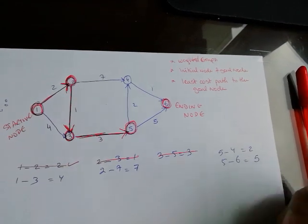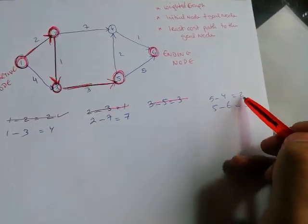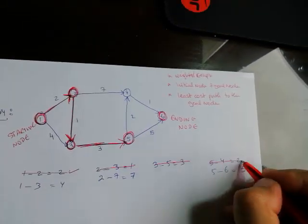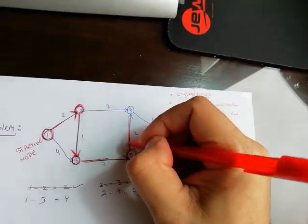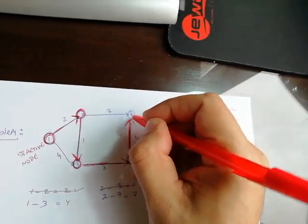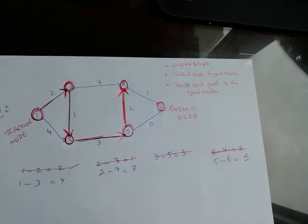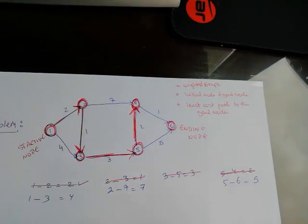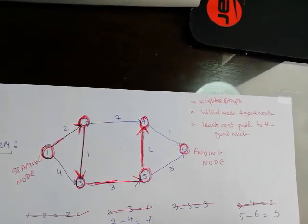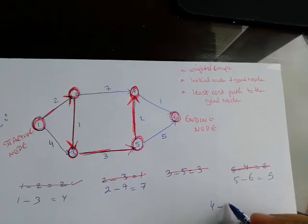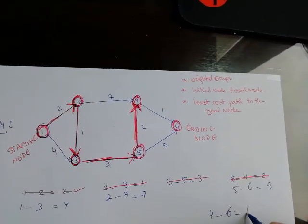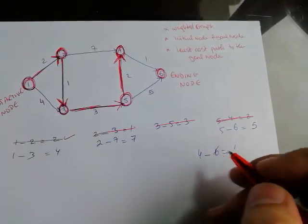Five to four equals five, and five to six equals five. The minimum of all remaining is five to four. Then we have four to six, which is equal to one, and the minimum of all of them is six.